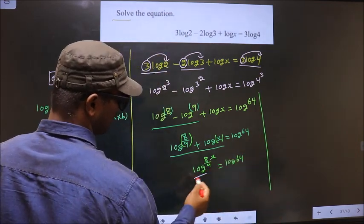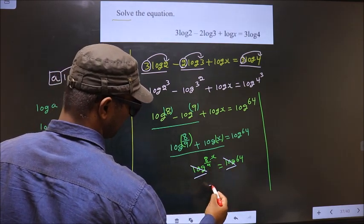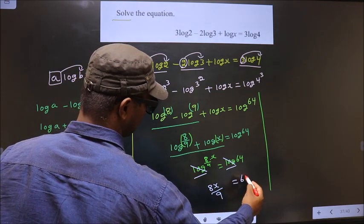Now log is present on both sides, so it gets cancelled. We're left with 8x by 9 equals 64.